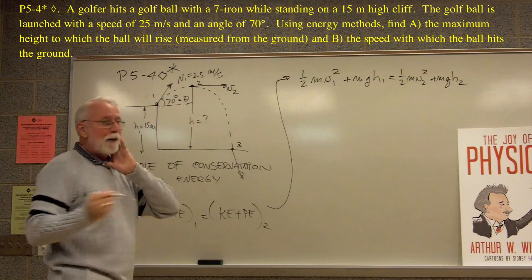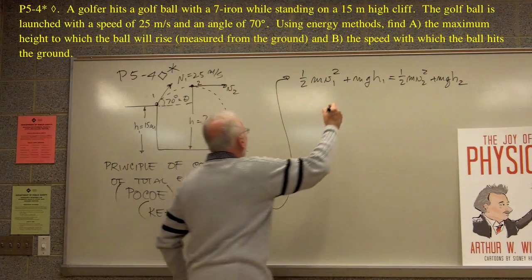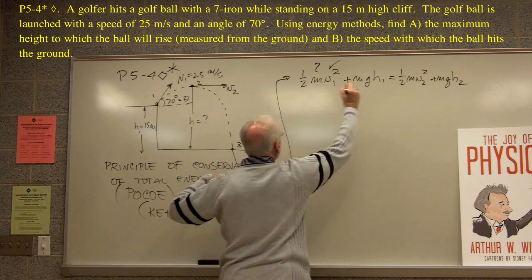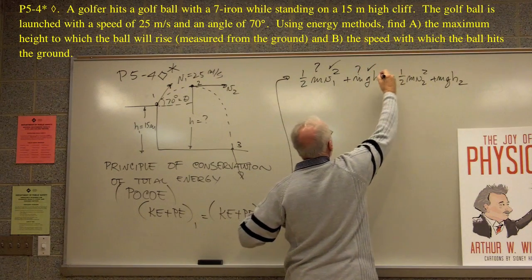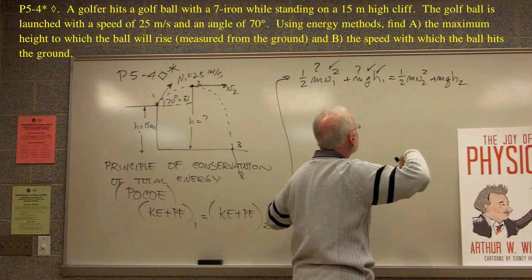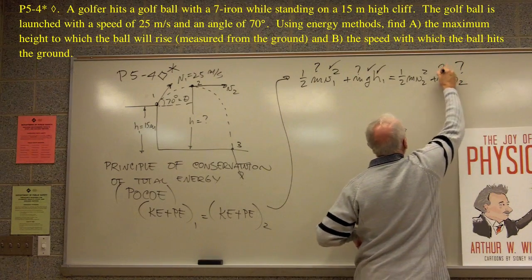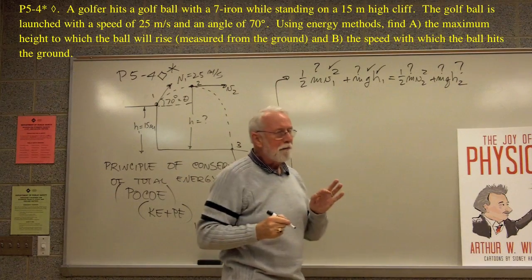So then, as usual, we've got to identify them. What do we know and what do we not know? We don't know m. We know v1, he told us. Don't know m. We know g, that's constant. We know h1, that was given. h2 is what we don't know. m, we don't know. We know v2. We know a little about v2.